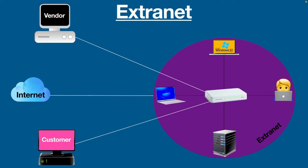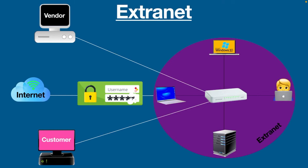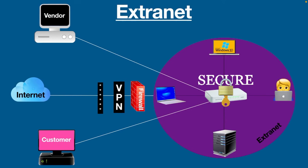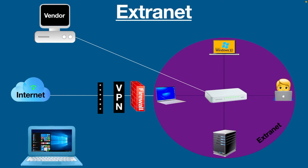Only employees of the organization and external members with login details can have access. Extranet also has security features like firewalls, VPNs, and password-protected credentials to prevent unauthorized access to the private network. Basically, an extranet is set up so that employees and customers can connect to the private network and communicate with each other. Let's take the previous example of a university — say a staff member wants to access the extranet from his home.